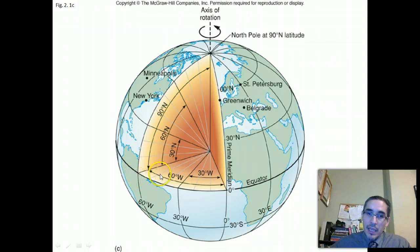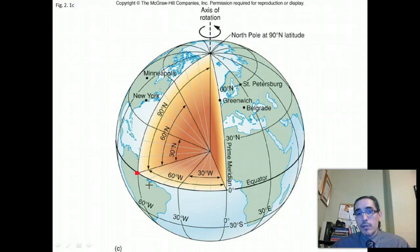So, for example, if you're standing on the equator here, let me bring up my tool again. So if you're standing right here, you're right on the equator, and so your latitude is zero degrees.